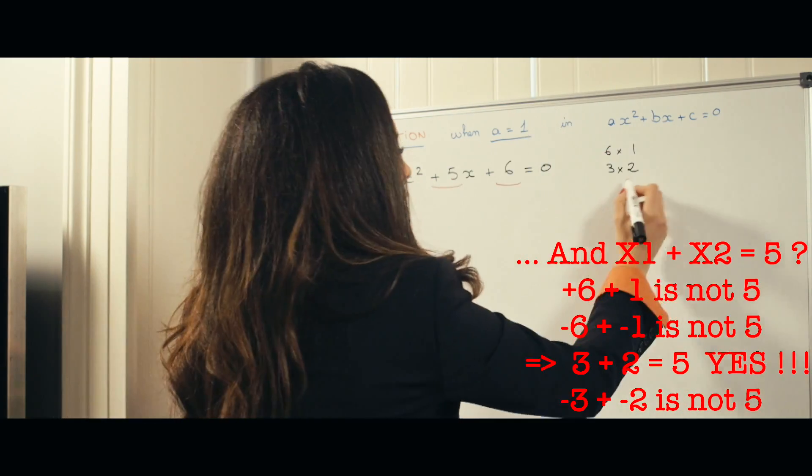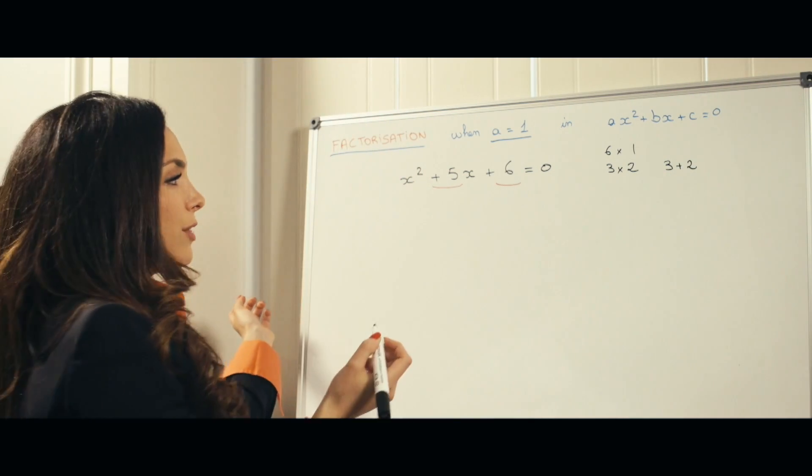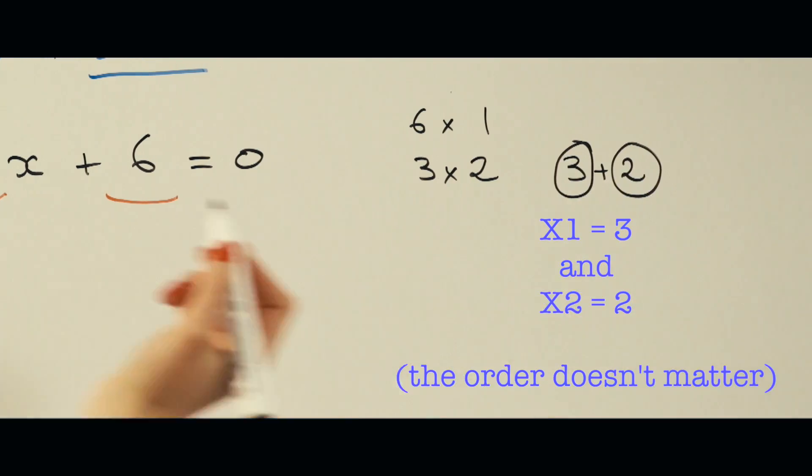So 3 plus 2 here is equal to plus 5. So yes, we found them. The two numbers are 3 and 2.